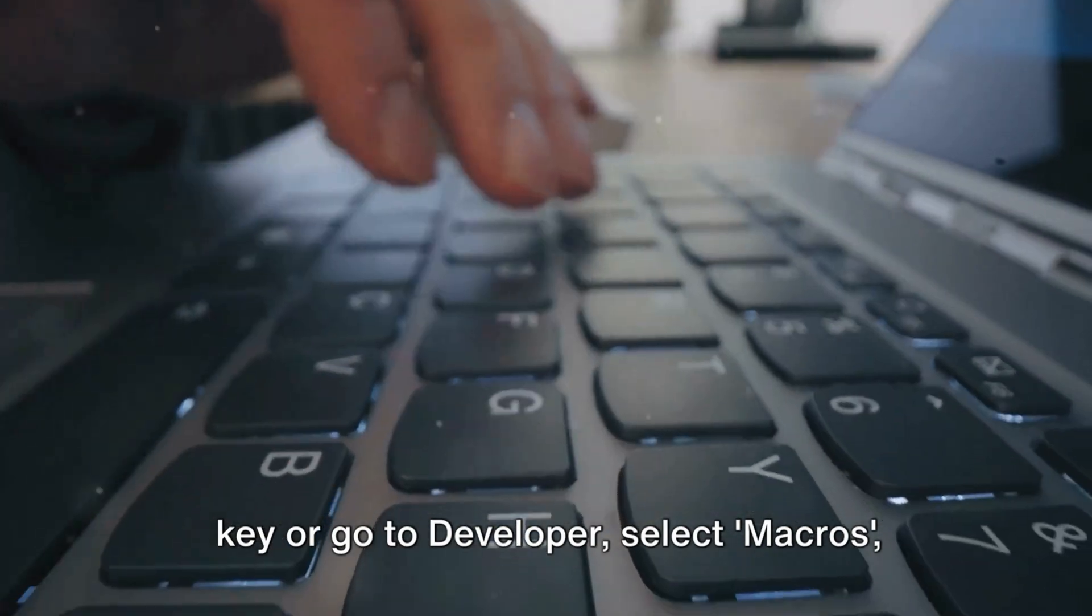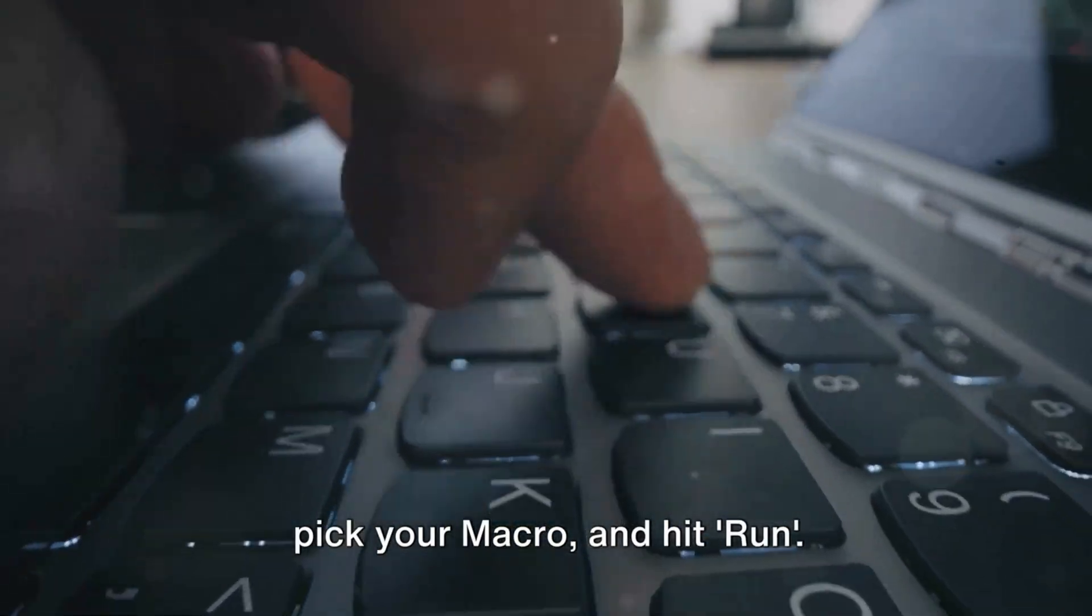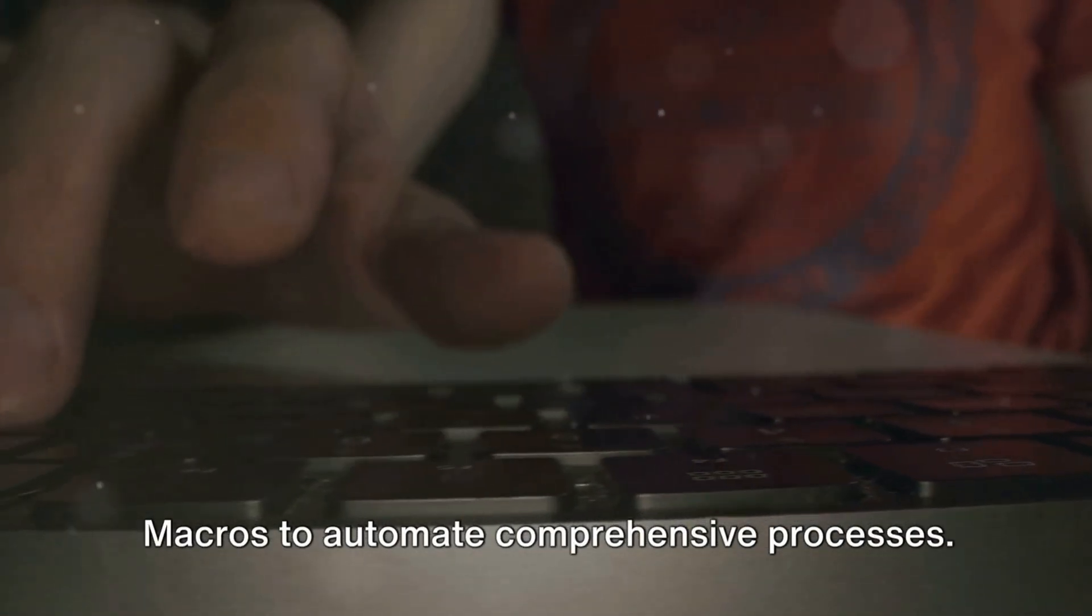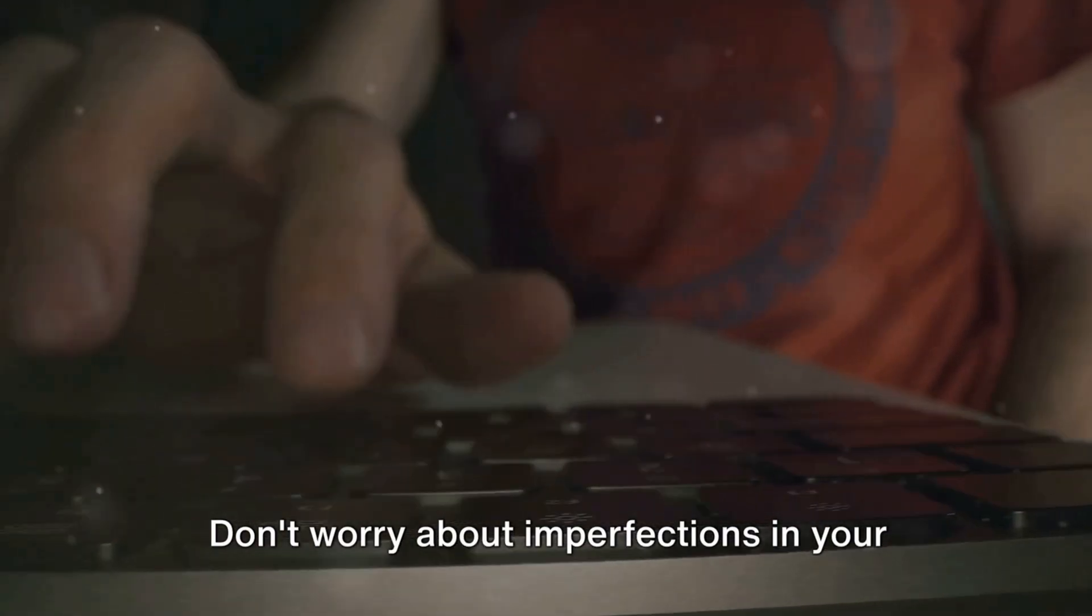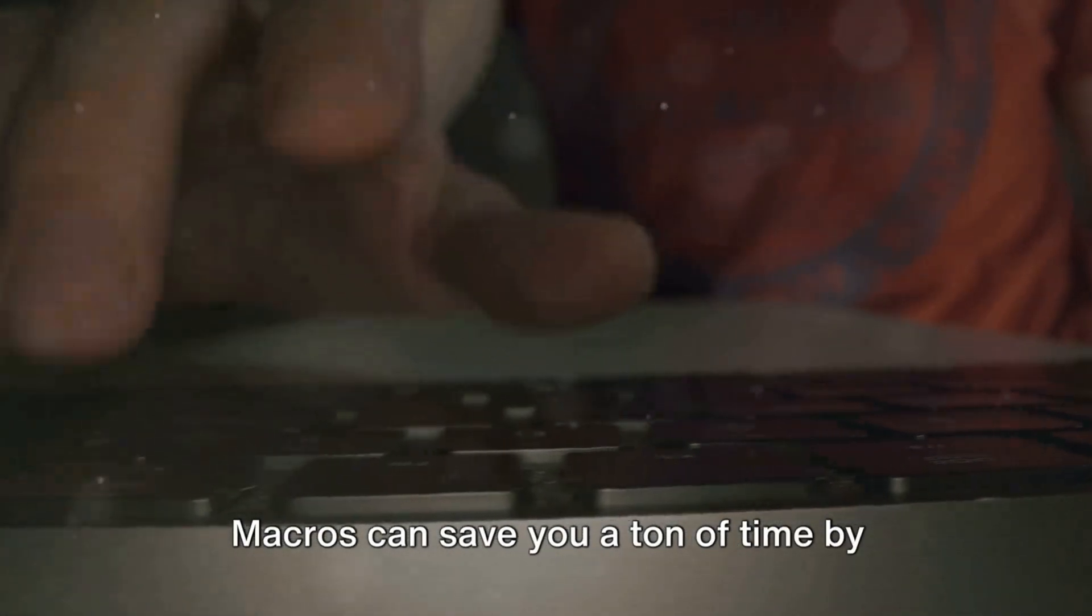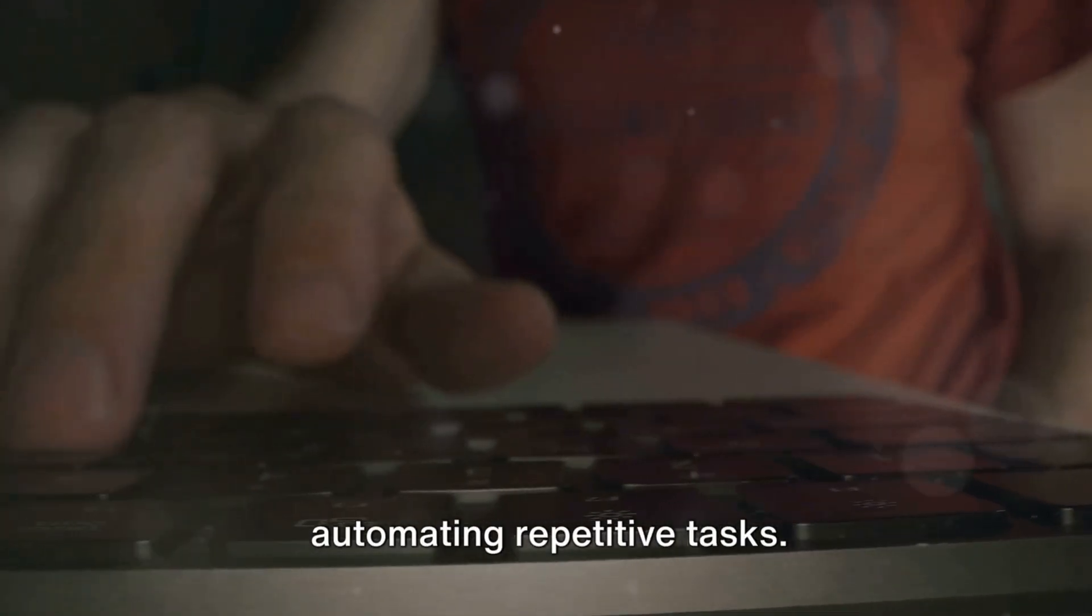Then hit OK. Excel starts to record your actions. To stop, just click Stop Recording. To execute the macro, use the shortcut key or go to Developer, select Macros, pick your macro, and hit Run. If you know Visual Basic for Applications or VBA, you can improve your macros to automate comprehensive processes. Practice makes perfect. Macros can save you a ton of time by automating repetitive tasks.